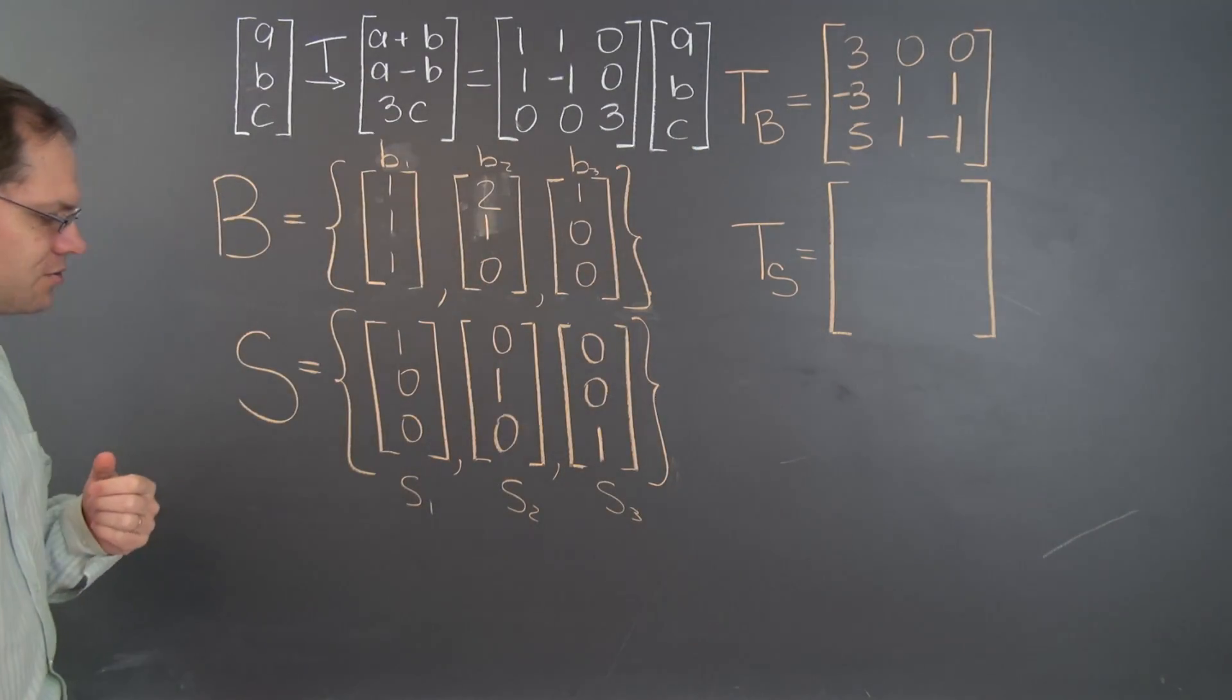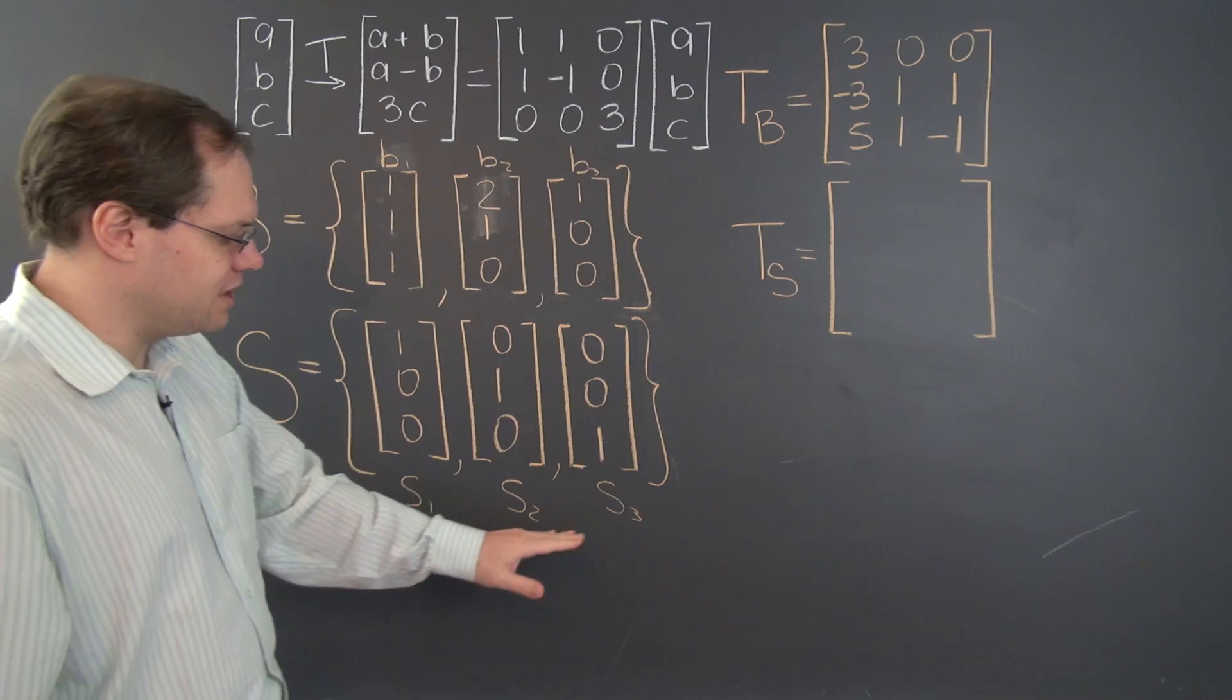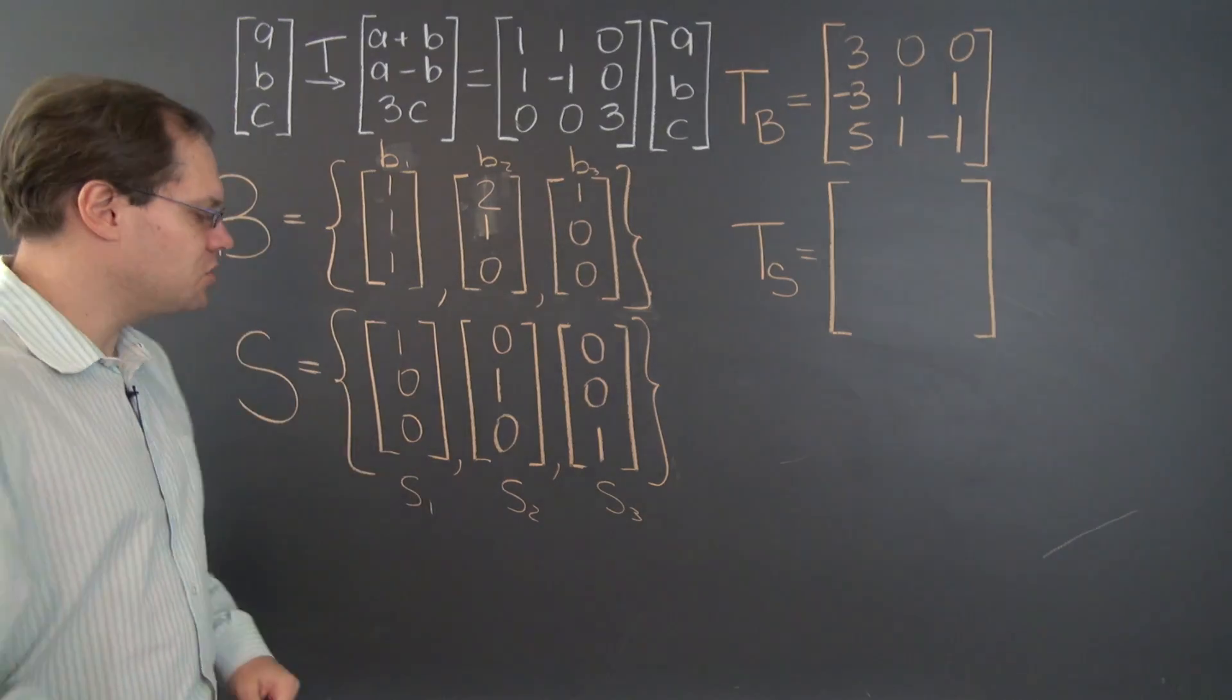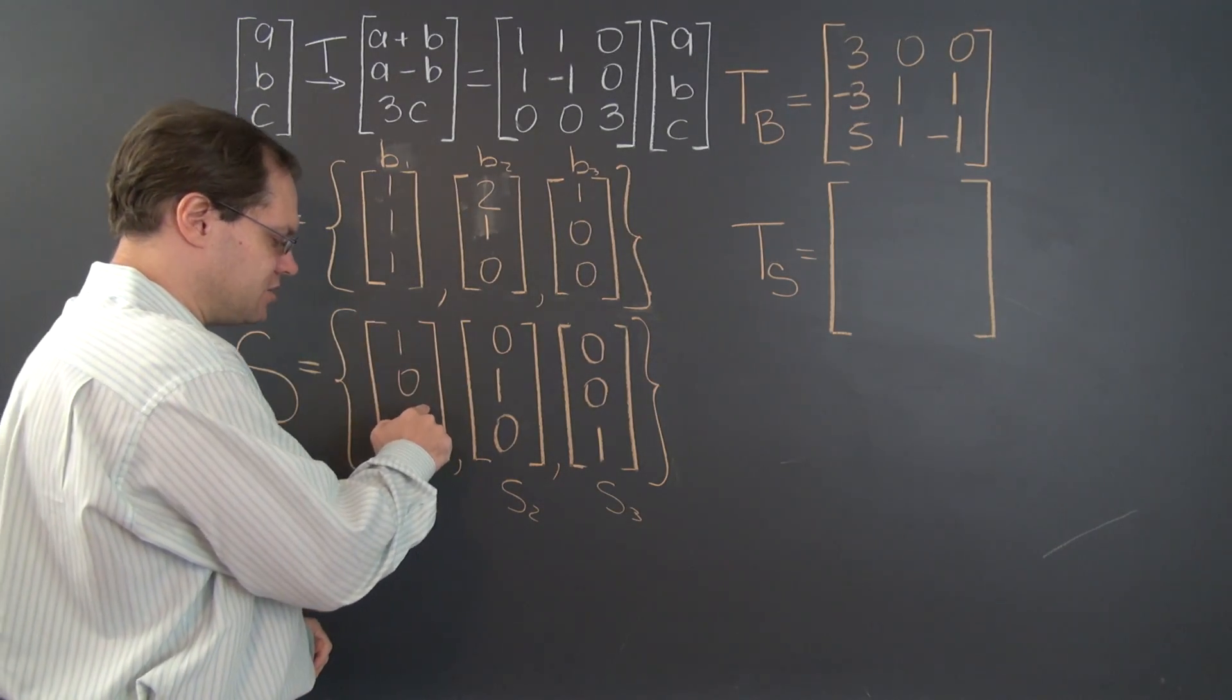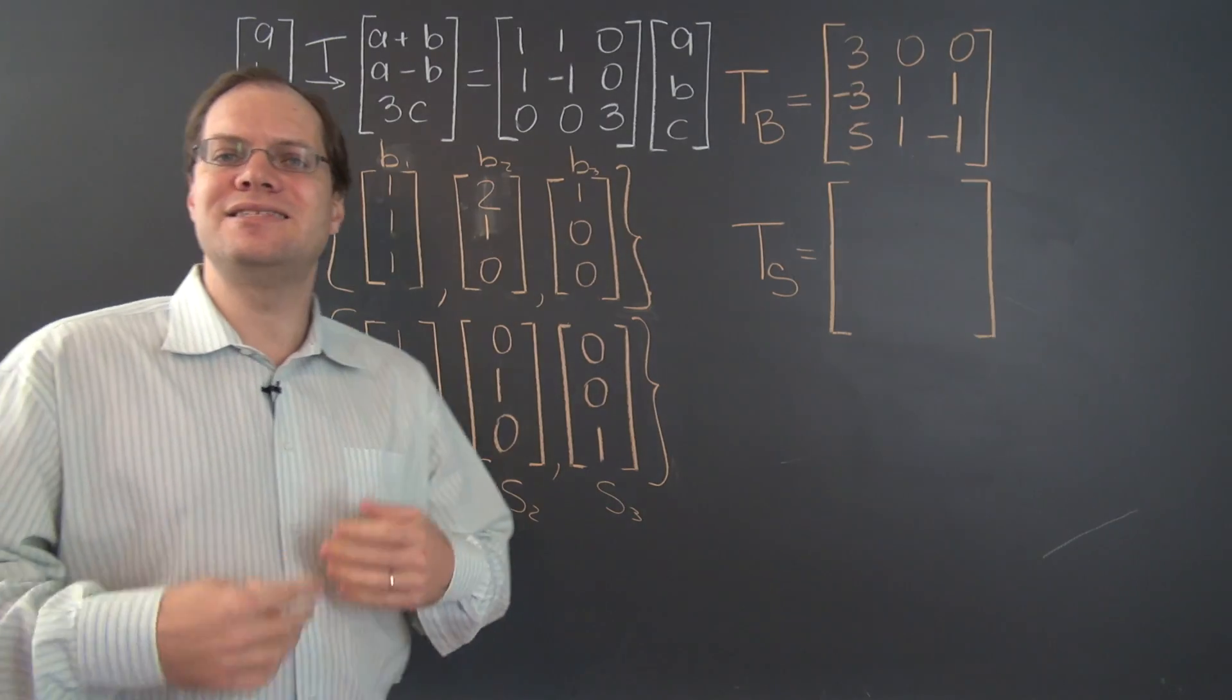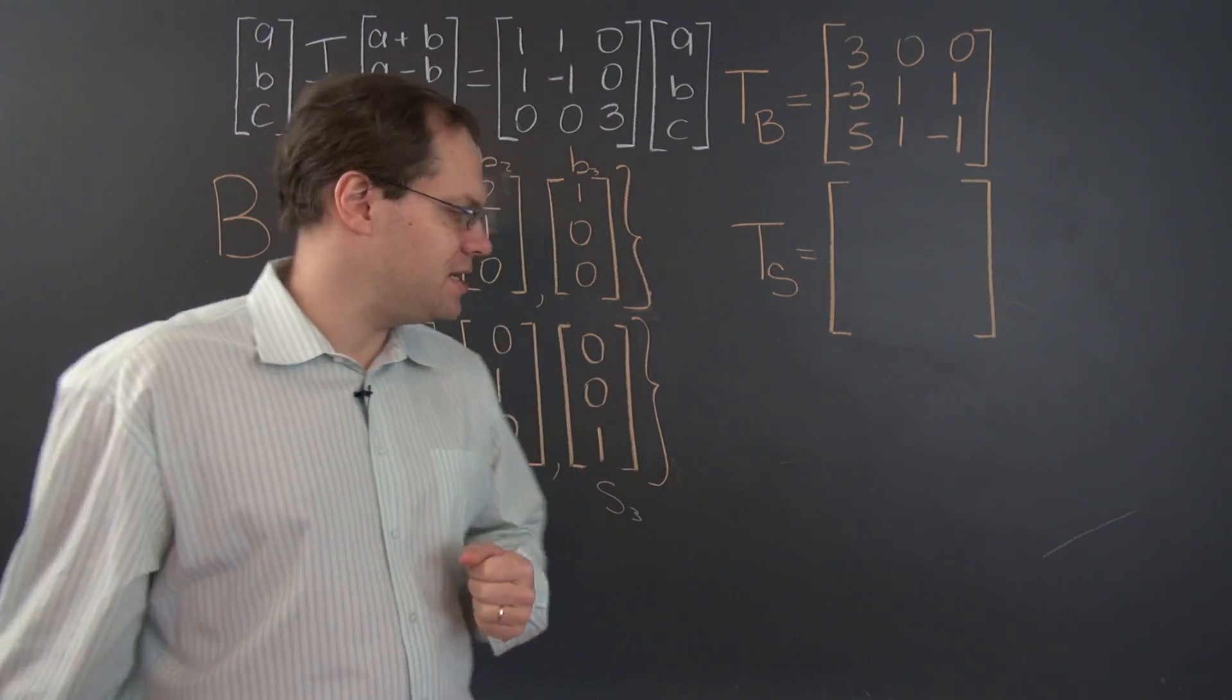So let's carry out the familiar algorithm. Our vectors are now called S1, S2, and S3. So we need to apply the linear transformation to each one of these vectors and decompose the result with respect to the same basis.